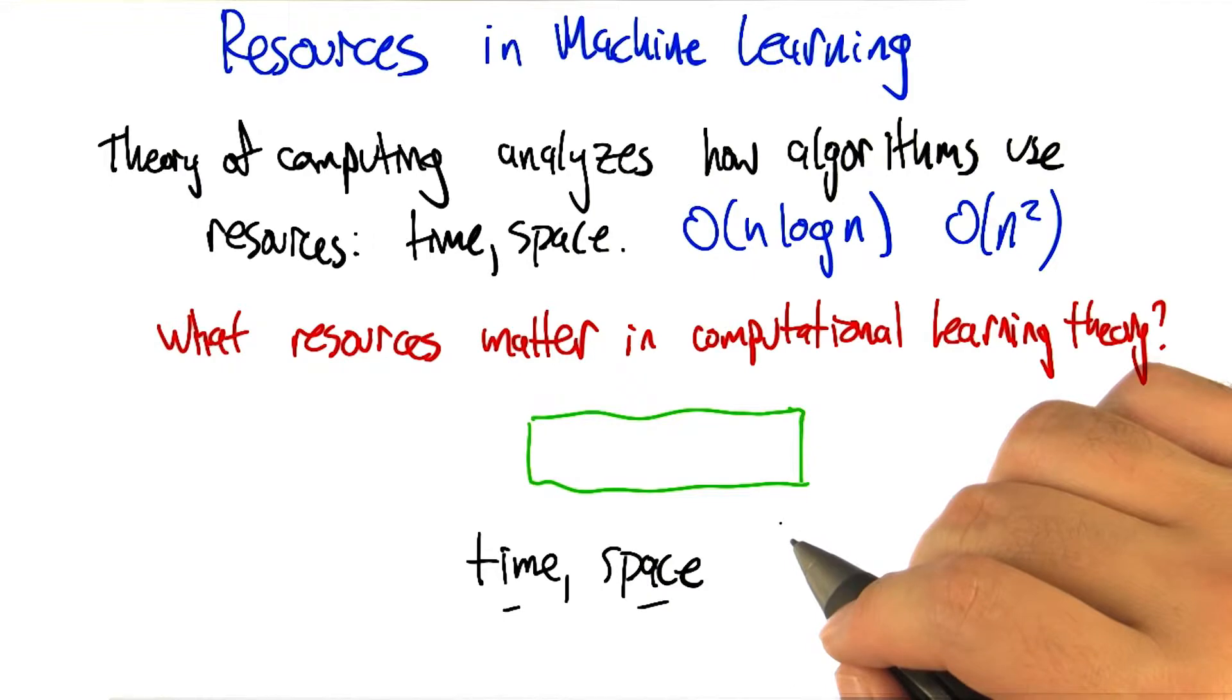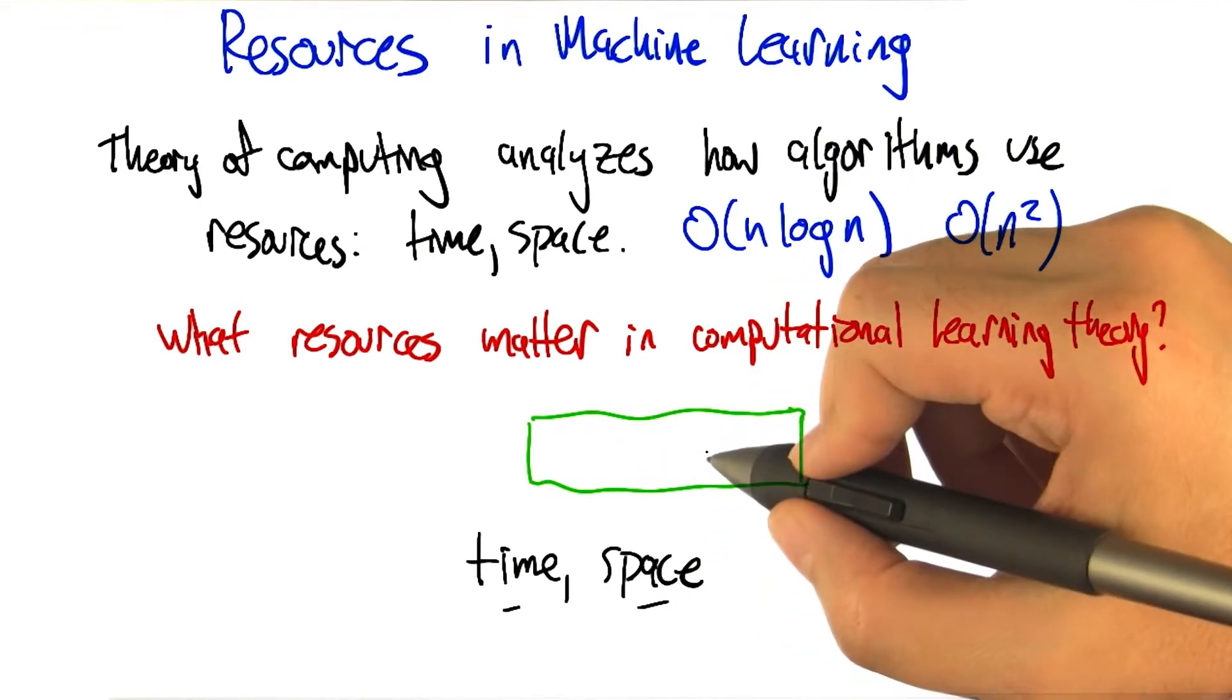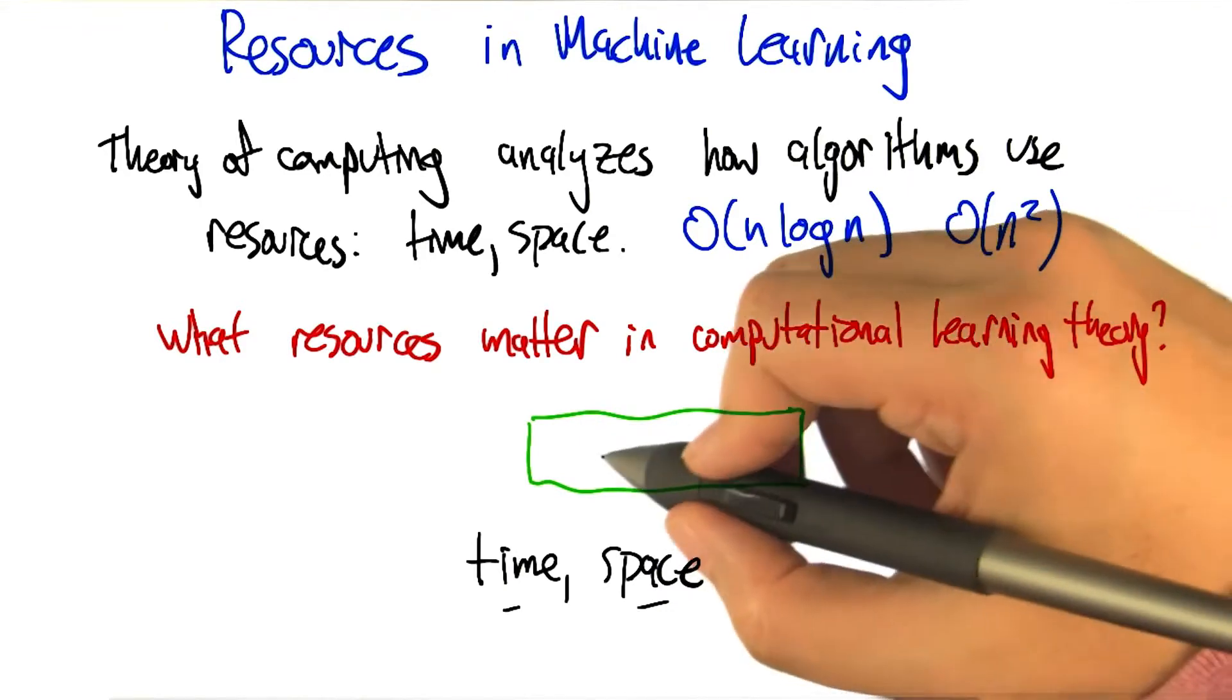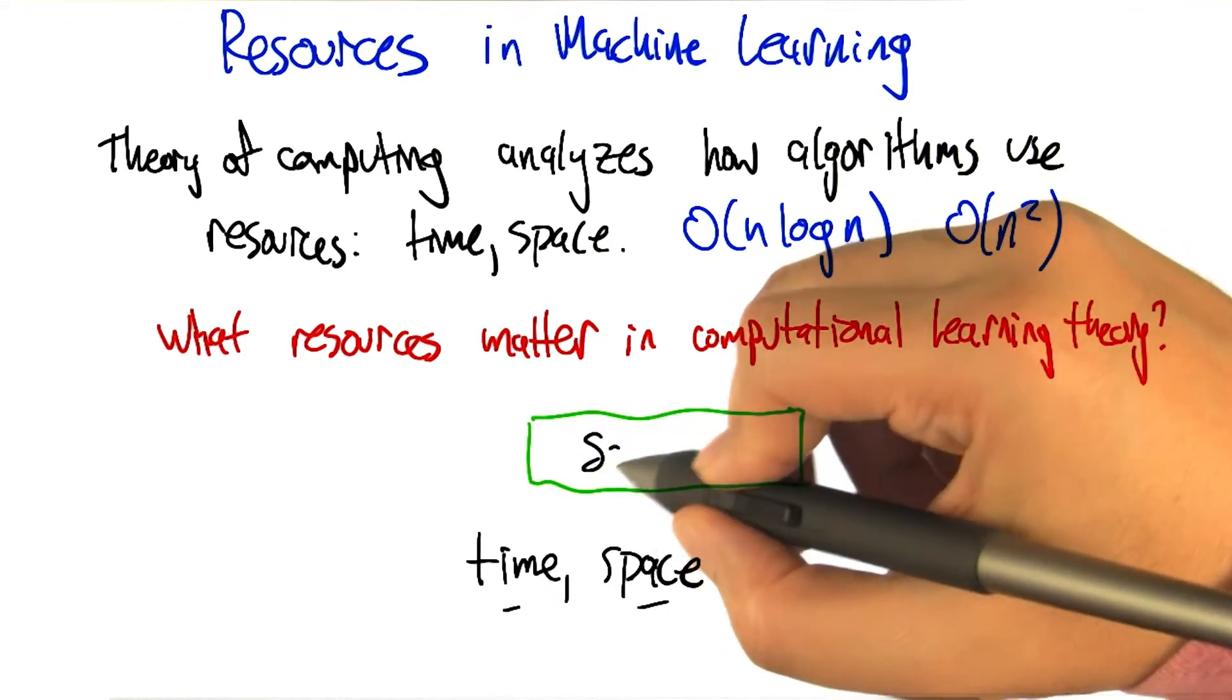Okay, so that was my third one. The only thing that matters in machine learning, or the most important thing in machine learning, is data. So I would think that another resource that we care about is the data, and in particular, the set of training samples that we have.